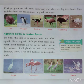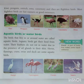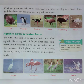Next topic is aquatic birds, or water birds. The birds that live in or around water are called aquatic birds. Aquatic birds get their food from water. Their feathers do not rot in water due to the presence of oil glands in their skin. Heron, flamingo, crane, swan and duck are some aquatic birds.